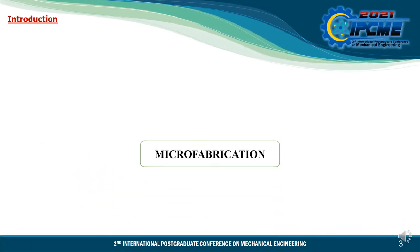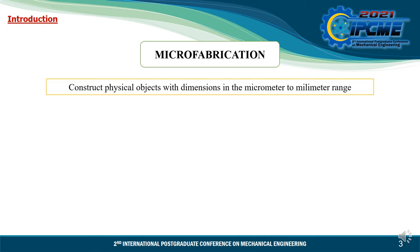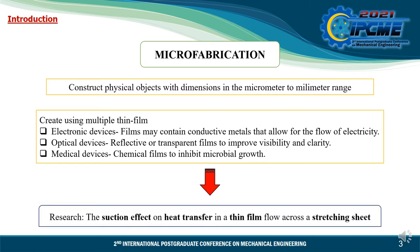For the introduction, we have microfabrication as an example of thin film fluid flow. In microfabrication, physical objects are constructed with dimensions in the micrometer to millimeter range, and they are created using multiple thin films. In electronic devices, films may contain conductive materials that allow for the flow of electricity. In optical devices, reflective or transparent films improve visibility and clarity. In medical devices, chemical films inhibit microbial growth. These applications encourage our attention to conduct research on suction effects on heat transfer in a thin film flow across a stretching sheet.